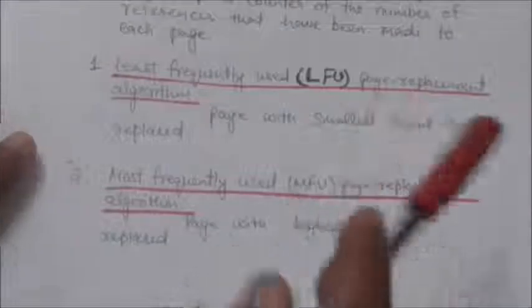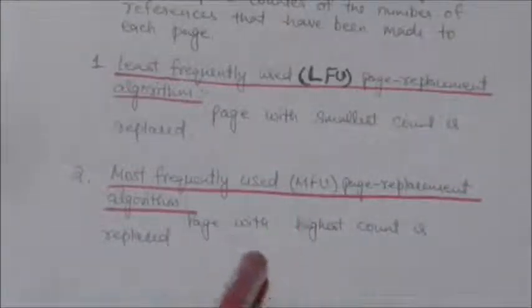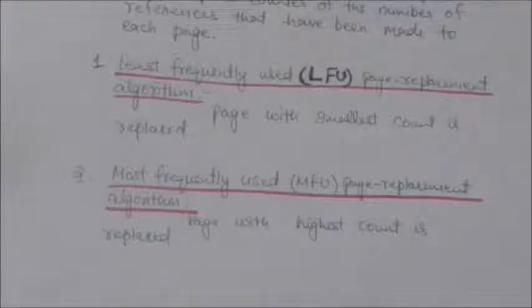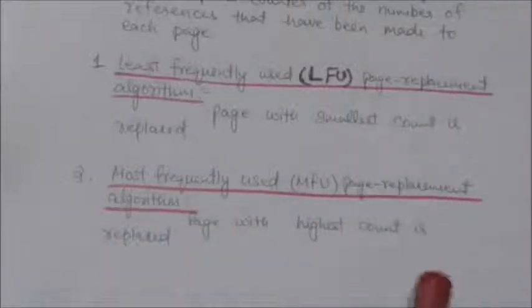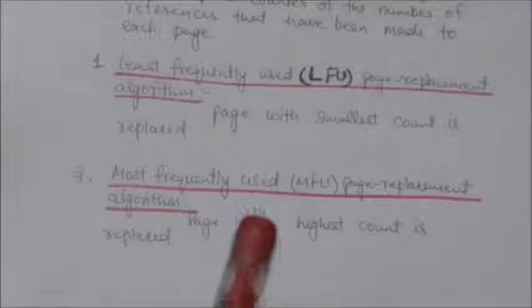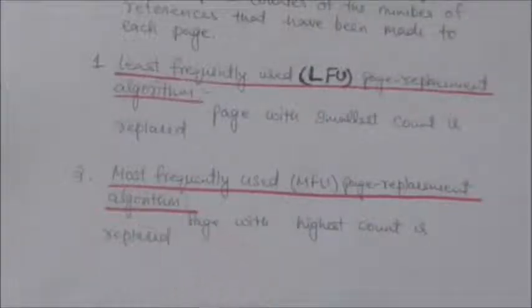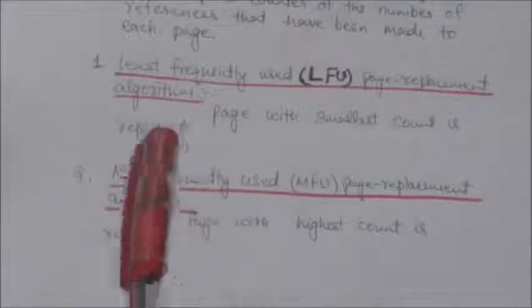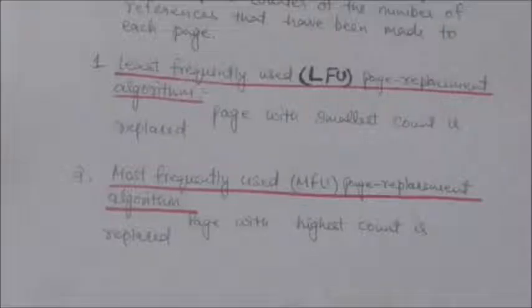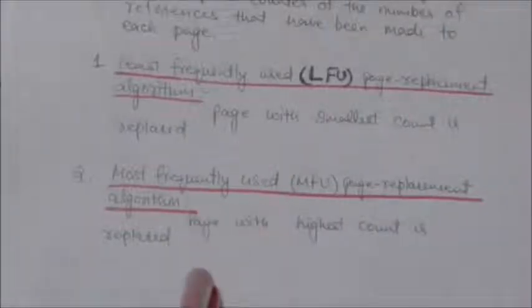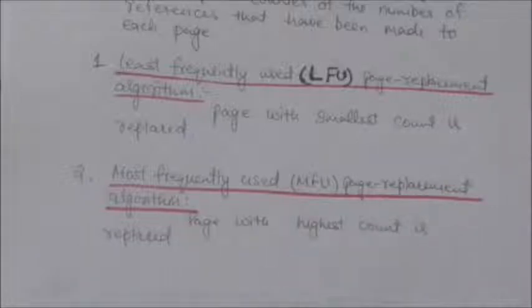This Most Frequently Used page replacement algorithm is based on the argument that the page which has the smallest count was probably just brought in and has yet to be used. So the pages with small counts should not be replaced. Based on this argument, in the MFU page replacement algorithm, whenever a page fault occurs and we have to replace a page, we replace the page with the highest count.